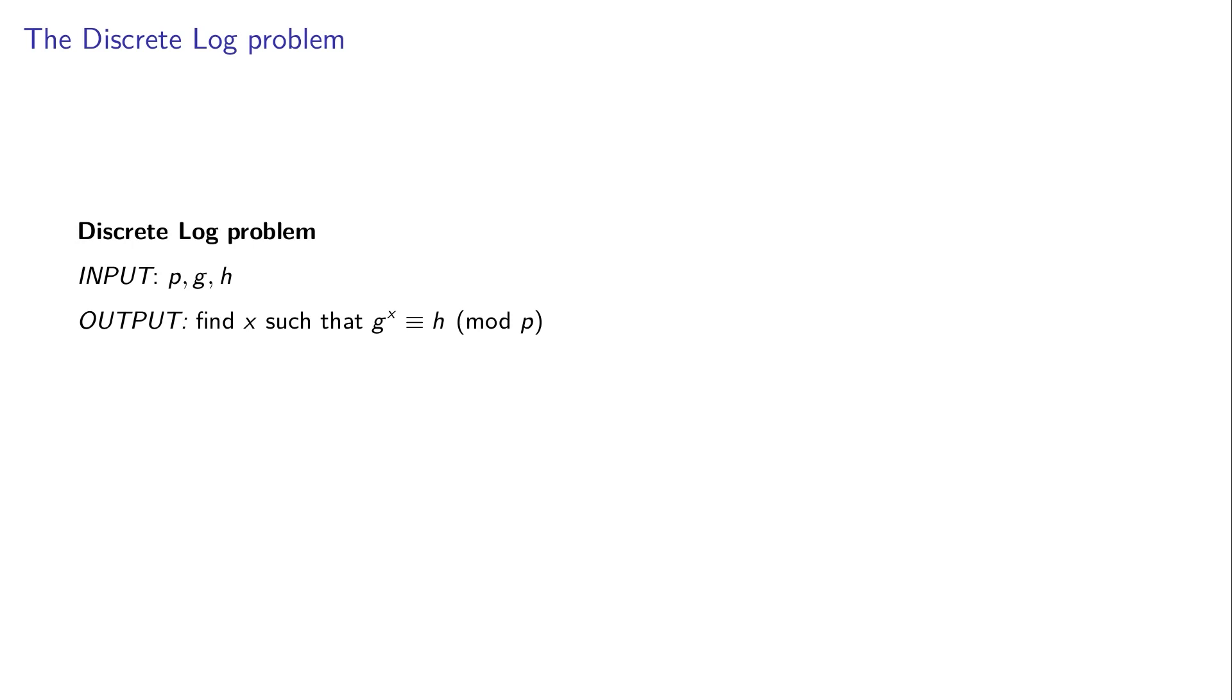Now the discrete logarithm problem is the following. Suppose that we have given p, g, and h. Then the question is to find the exponent, the logarithm of h in this equation. And we make the following assumption: that the discrete logarithm problem is difficult. So what I'm saying is this: If I choose g, x, and p, maybe x and p will be 2000 bits long, and I will compute h equals g to the power x, and now I'm giving you g, h, and p, but I'm not giving you x, and I'm asking you to compute x for me. Well, it's very unlikely you will be able to do that. So this is what we call the discrete log problem. It's similar to factoring and it's very useful in cryptography.